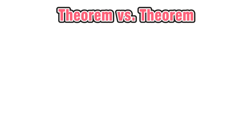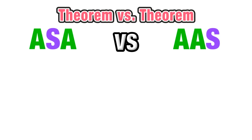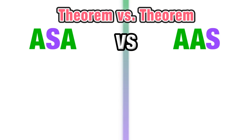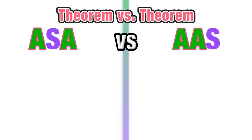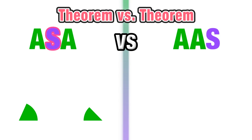Since these two theorems are so similar, it's a very common mistake for students to mix them up. Both theorems contain two congruent angles as well as one congruent side. Angle-side-angle has two congruent angles with the side in between those angles — just like it's written, the S is in between the two A's.